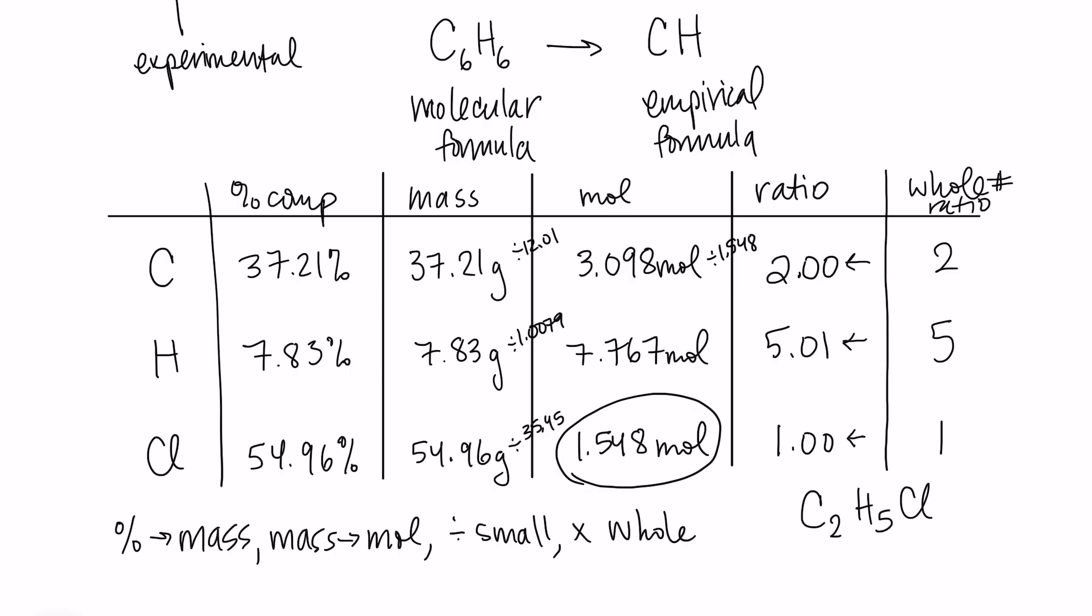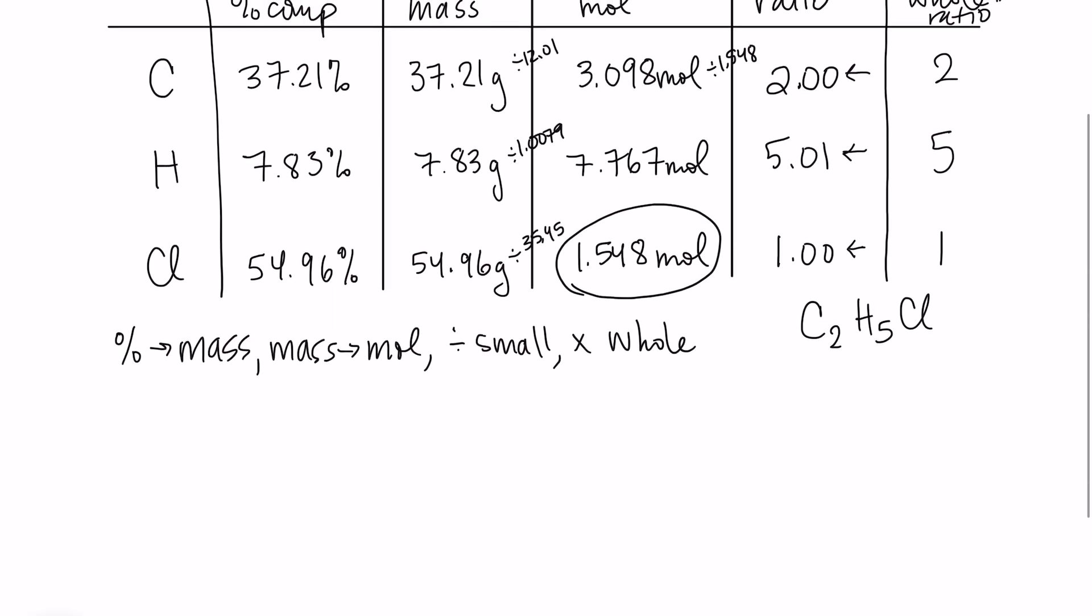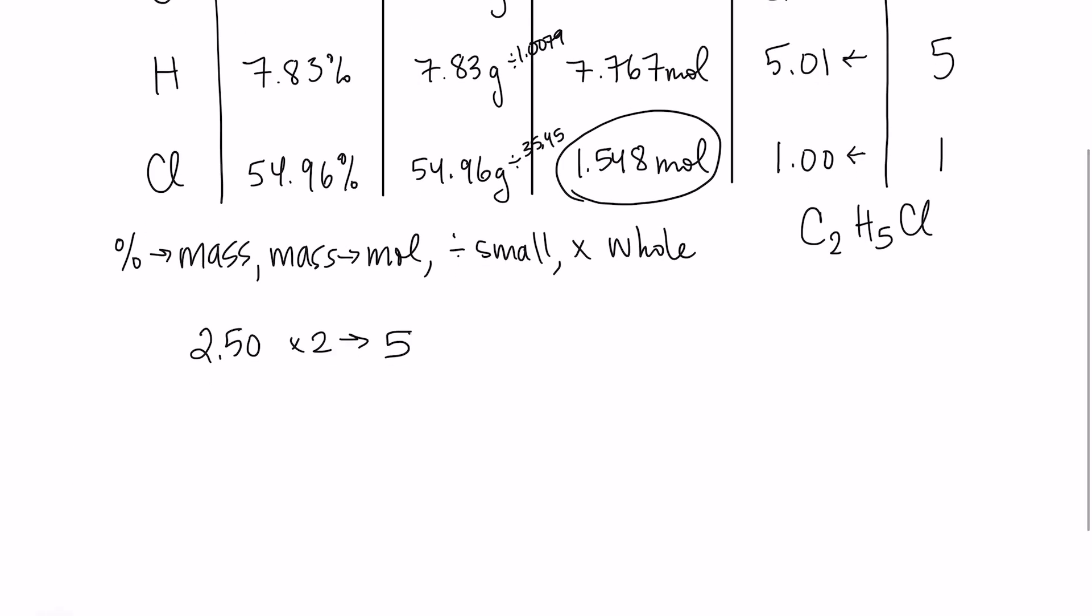Now, the only thing that can be tricky about this is sometimes you'll get a ratio here. And instead of getting something that's like a whole number, you might get something like 2.5. If you get 2.5 for your ratio, then that last step, you're going to have to multiply by 2 to make it into 5. But you also have to multiply by 2 for all of the other ones. So in this case, let's pretend that we had gotten 2.5 for the first ratio, 5 for the second ratio, and 1 for the last ratio. I still have to multiply all of them by 2. So then I would get 10 and 2 if that happened when we did this calculation.